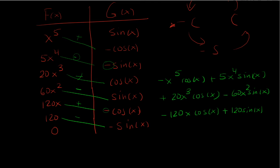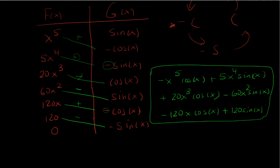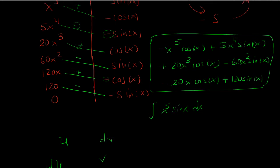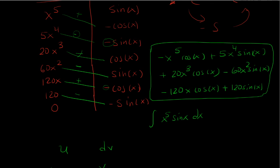So this is the answer to the integral of x⁵ times sine x dx. This saves a lot of time, because usually integration by parts requires repeating the process many times. But lining it up in this table format saves a lot of work.